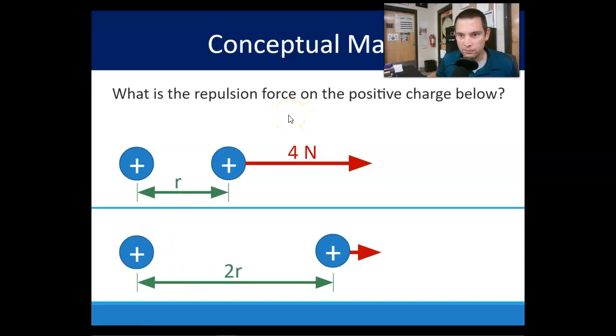What is the repulsion force on the positive charge below? Pause it, try it, let's see. There's your hint, and then there's your solution, one newton. Which is one quarter of the initial force, right? Because we've doubled the distance, and r is squared. Doubled the separation distance, so r is squared. So it's going to follow that same inverse square law that Newton's universal law of gravity followed.